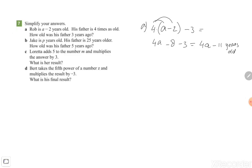Because we don't know what a is, you have no idea what the age is from Rob. Let's look at exercise b. Jake is p years old, so we start with the letter p. His father is 25 years older, so p plus 25.